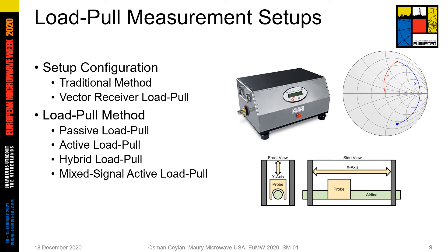The most popular solution to have an adjustable impedance for RF applications is an impedance tuner. Basically, a tuner is a mechanical equipment and has a moving probe on a fixed transmission line. If you move this probe up-down and right-left, you can control the impedance at the tuner's ports. The more accurate control of the probe means the more accurate and reliable impedance control. I will explain how we use the tuners to control the source and load impedances in the measurement setups for source-pull and load-pull measurements.